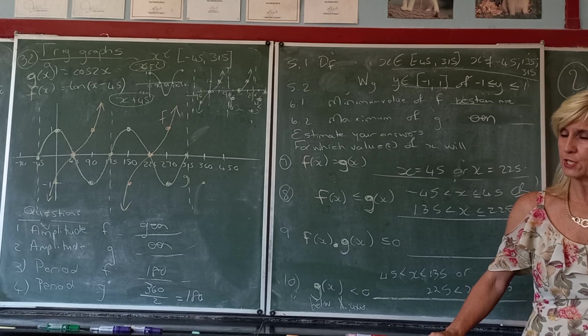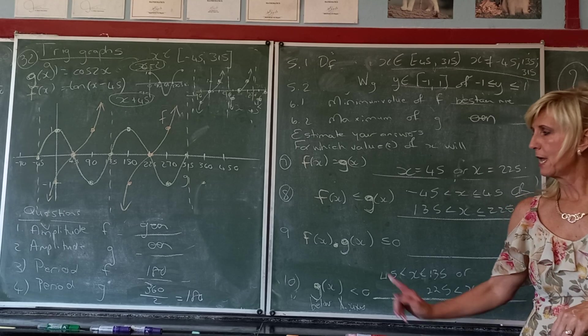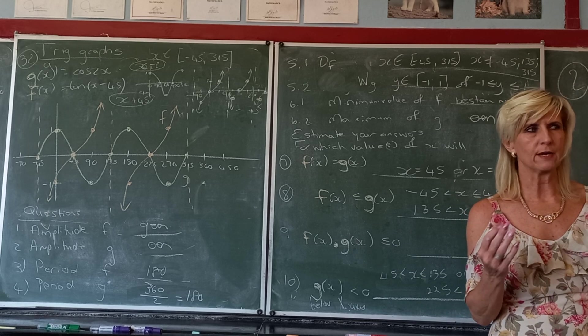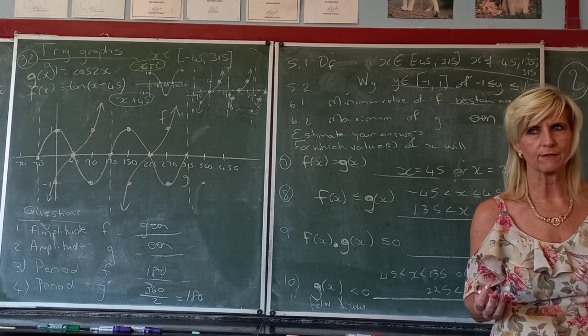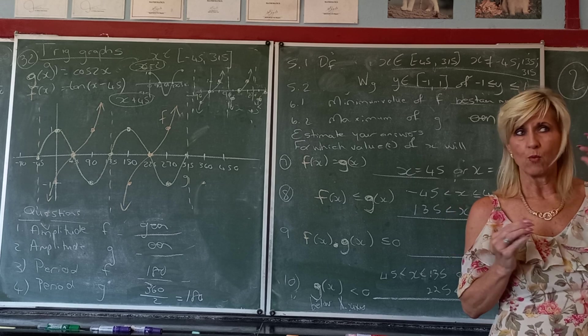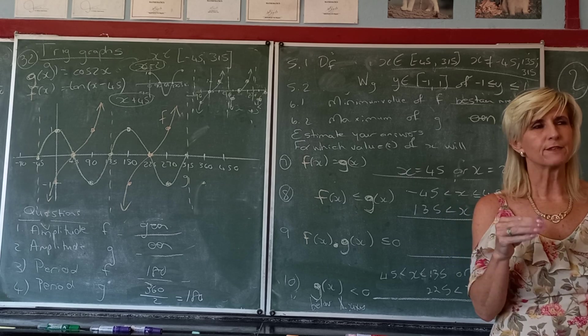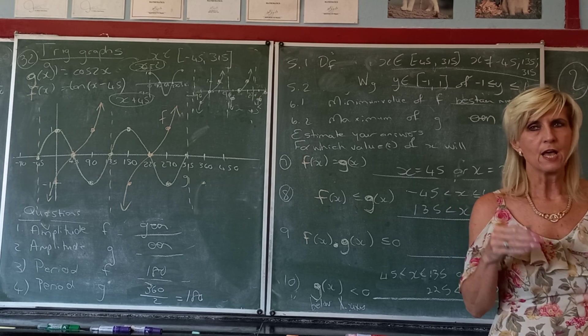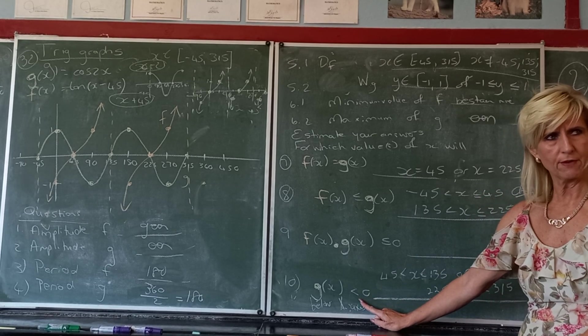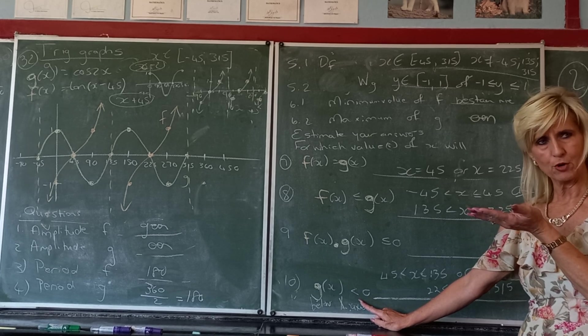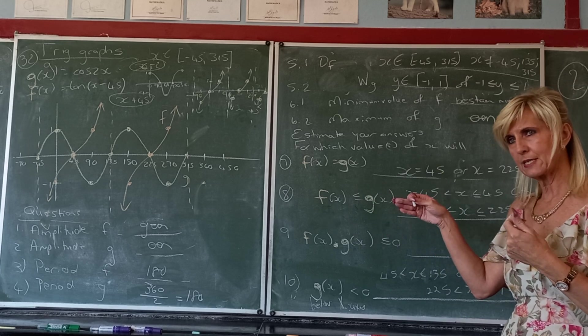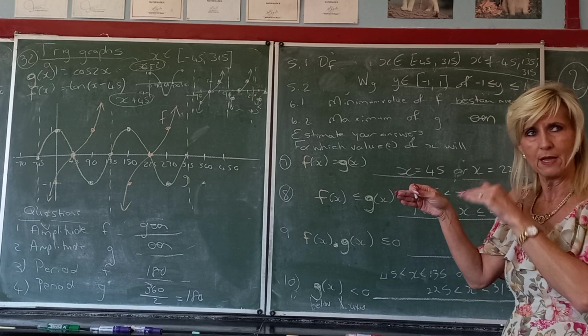Now, like I told you last year, if you time two things and you want to get a negative, what must the two signs be to get to a negative? One positive, one negative. Which one? It doesn't matter. One must be positive, one must be negative. So in plain English it means the one graph, where's the graph positive and negative? Below the x-axis is negative, above the x-axis is positive. So I'm actually looking for where the one graph is above the x-axis while the other one is below.